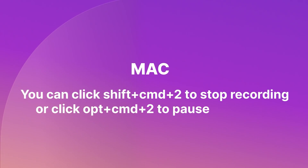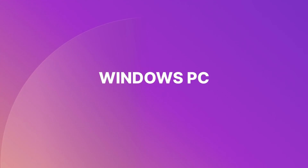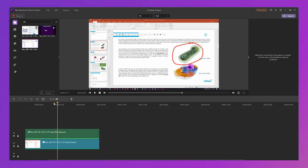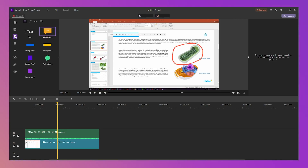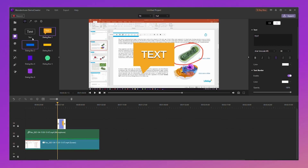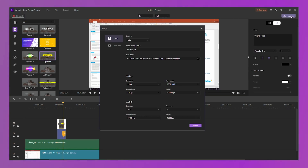During recording, on a Mac you can click Shift-Command-2 to stop recording, or Option-Command-2 to pause or resume. On Windows PC, you can hit F10 to stop recording, or F1 to pause and resume. After the recording is finished, the screen and audio will be presented directly in the Demo Creator Video Editor. You can edit it as you like, such as adding captions or annotations, then export to share it.